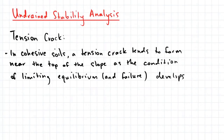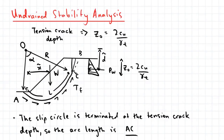We now need to consider the effect of a tension crack. In cohesive soils, a tension crack can form near the top of the slope as the condition of limiting equilibrium and failure develops. The arc length of the slip circle is terminated at the bottom of the tension crack. So if the tension crack wasn't present, the failure plane would occur from A to B, but with the tension crack it stops at C, and the length of the arc L is given by AC.